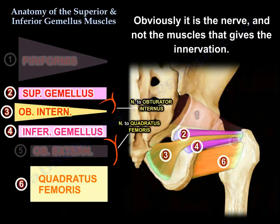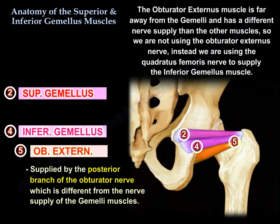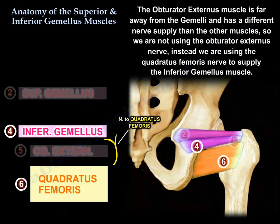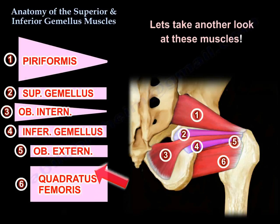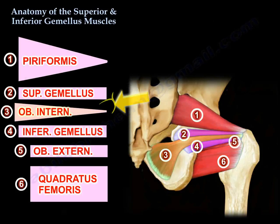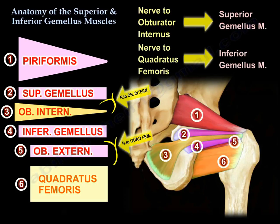Obviously it is the nerve and not the muscle that gives the innervation. The obturator externus is far away from the gemellae and has a different nerve than the other muscles, so we are not using the obturator externus nerve — we use the quadratus femoris nerve to supply the inferior gemellus. To summarize: piriformis is at the top, quadratus femoris at the bottom, obturator internus in the middle — superior gemellus above it, inferior gemellus below it. Obturator internus gives the superior gemellus its innervation; quadratus femoris gives the inferior gemellus its innervation.